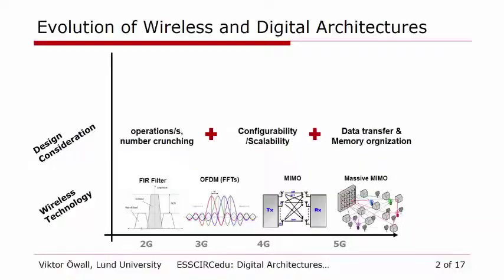When I started in the early 90s, it was more or less focused on operations per second — that is number crunching. Then as we went further, we started to have things like configurability and scalability that became important. Today we see a shift again, where data transfers and memory organization is one crucial parameter. It's not that other things have disappeared, but this is becoming more and more important.